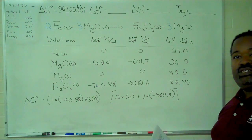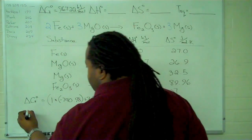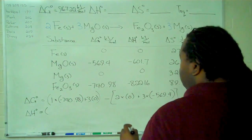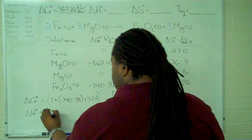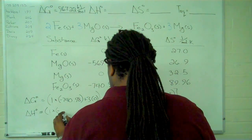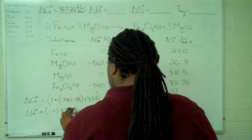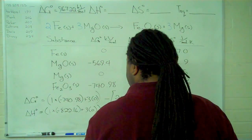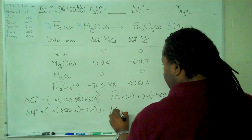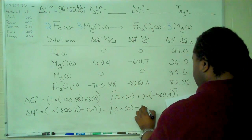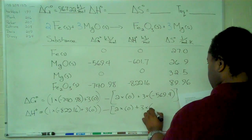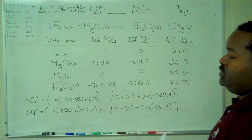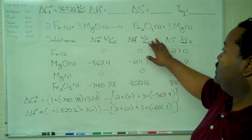We'll perform the same thing with the stoichiometric sum of products minus stoichiometric sum of reactants. So for the delta H, minus 822.16, 3 times 0 is going to be 2 times 0 plus 3 times negative 601.7. And the enthalpy is also in kilojoules per mole.